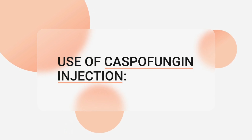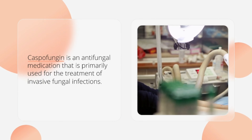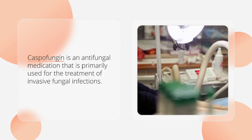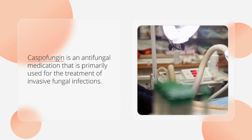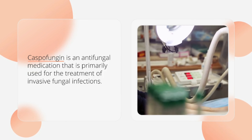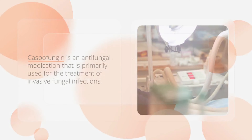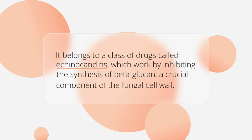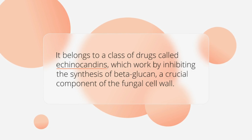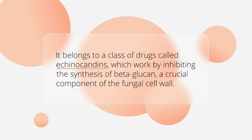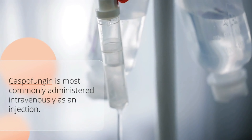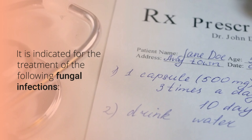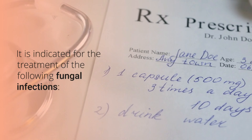Use of caspofungin injection. Caspofungin is an antifungal medication that is primarily used for the treatment of invasive fungal infections. It belongs to a class of drugs called echinocandins, which work by inhibiting the synthesis of beta-glucan, a crucial component of the fungal cell wall. Caspofungin is most commonly administered intravenously as an injection. It is indicated for the treatment of the following fungal infections.